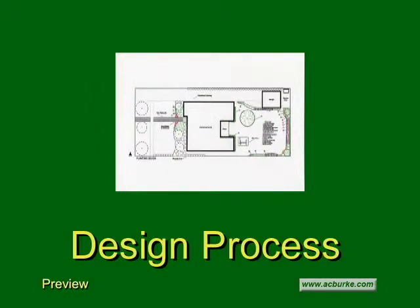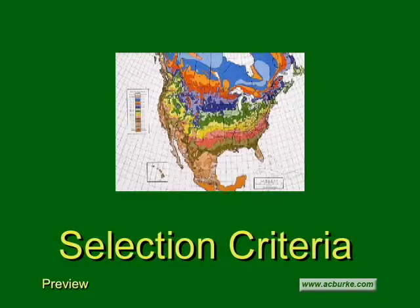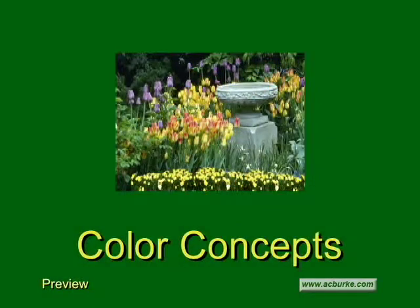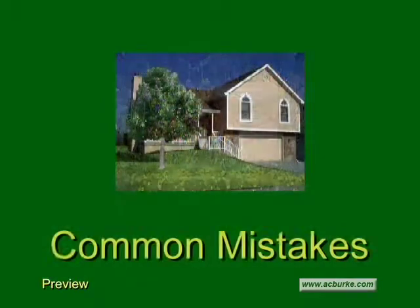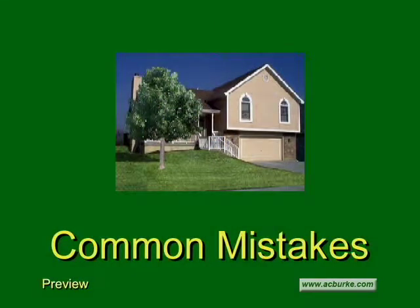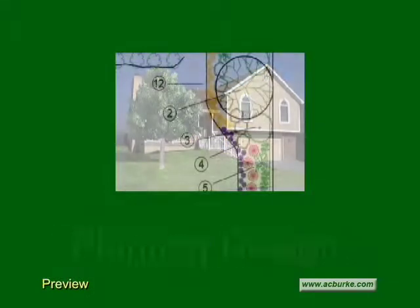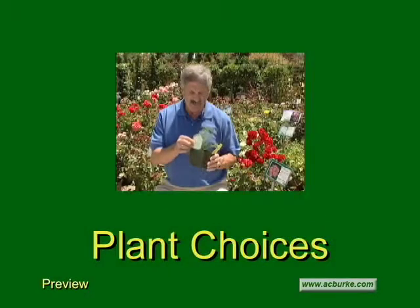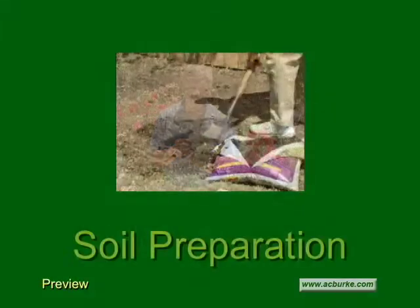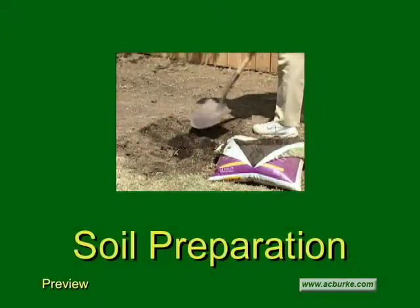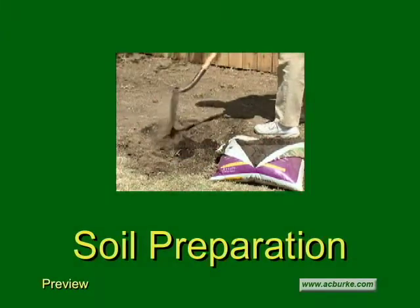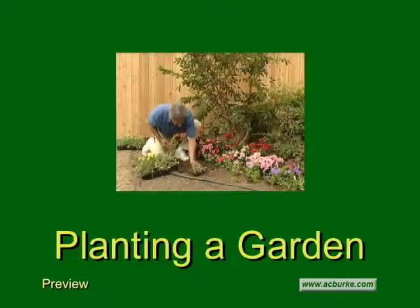In this program, you will learn about the landscape design process. We'll consider some basic plant selection criteria and some plant color concepts. Then we'll look at some common planting design mistakes. I'll show you what a completed planting design looks like. We'll look at different types of plants. I'll introduce you to some basic soil preparation concepts. And finally, I'll show you how to install new plants in your garden.